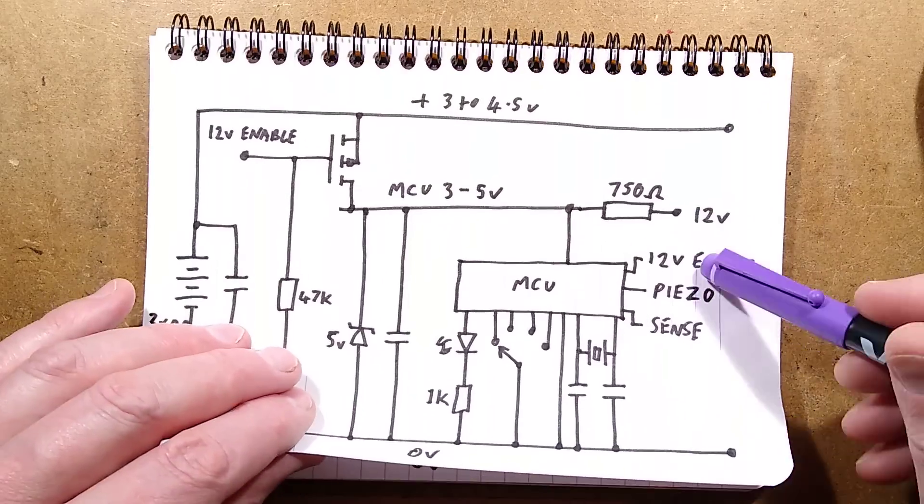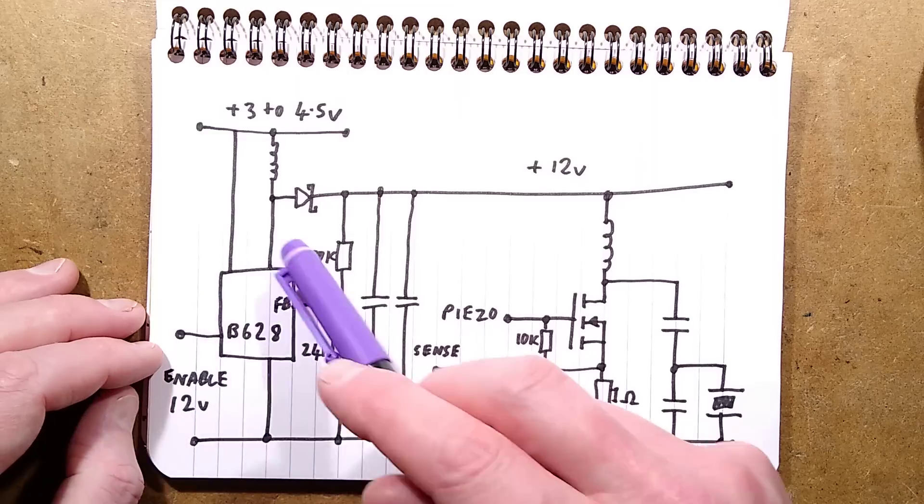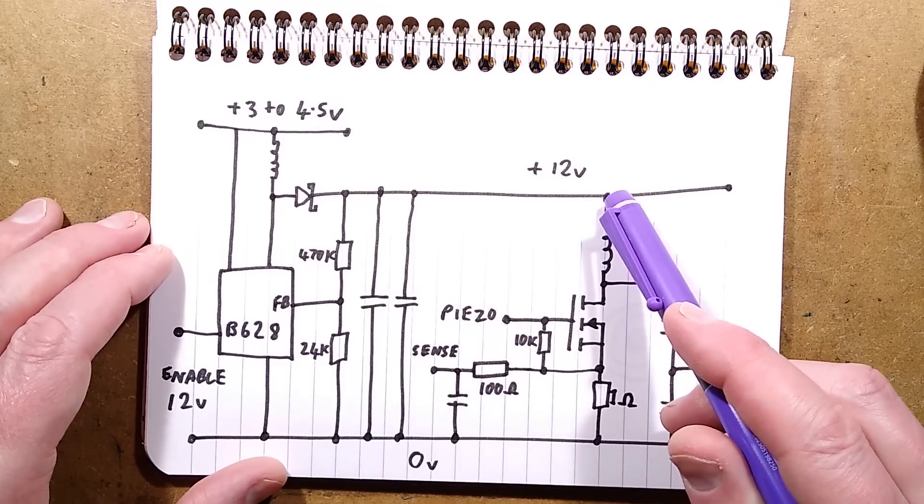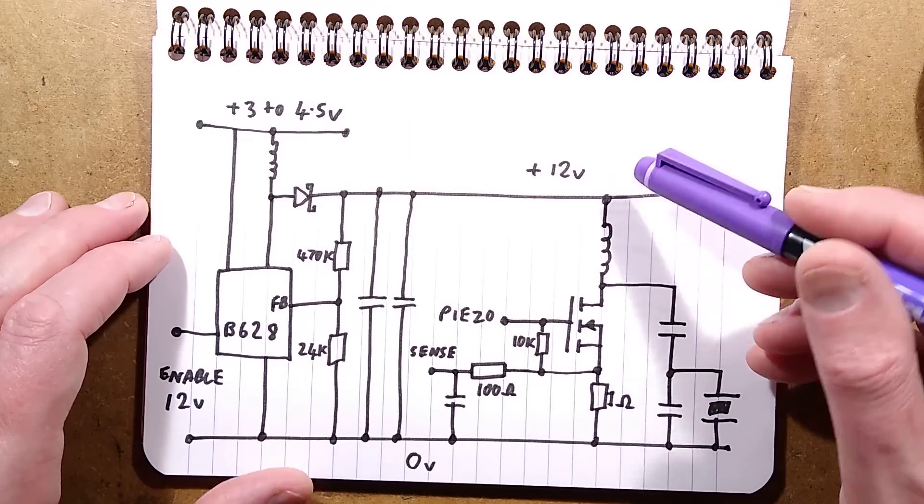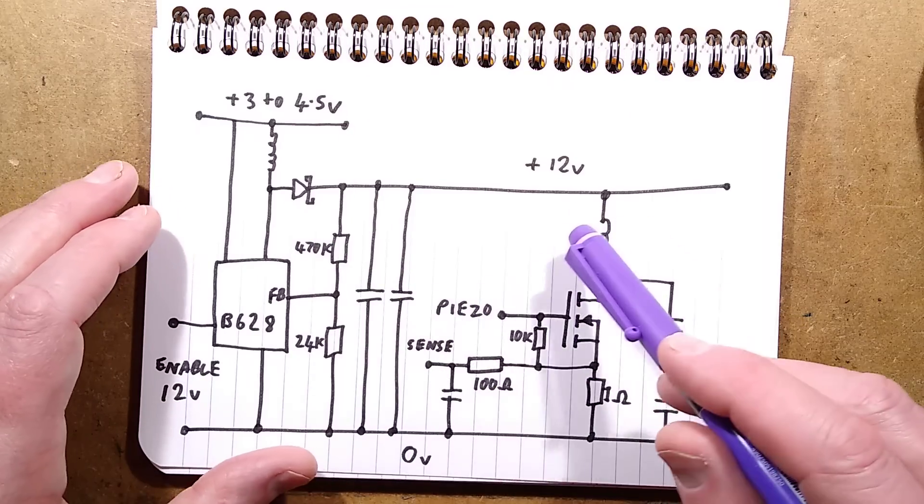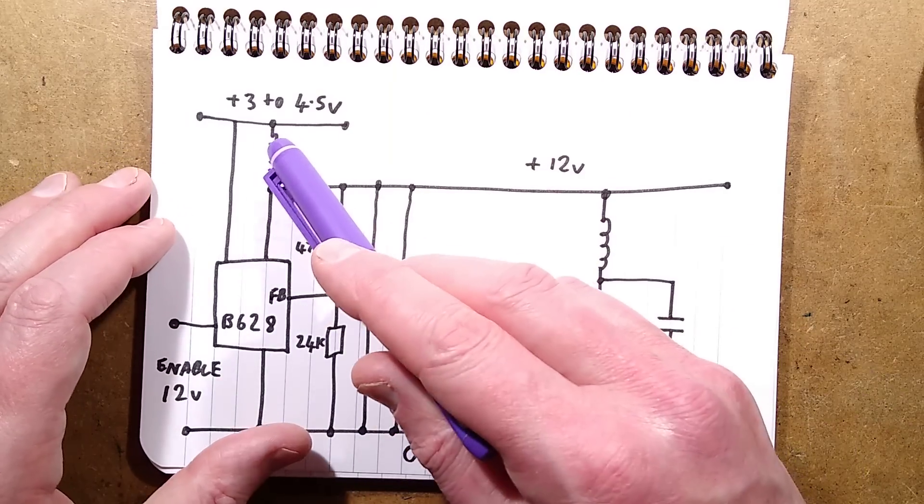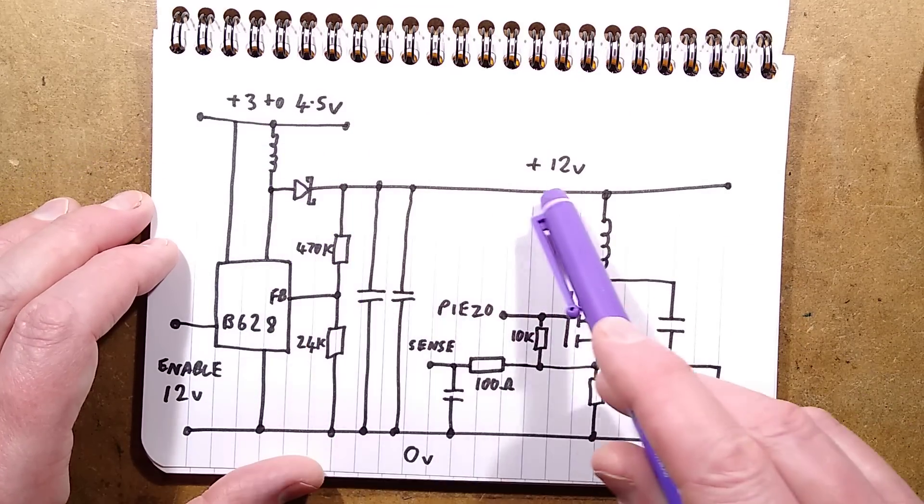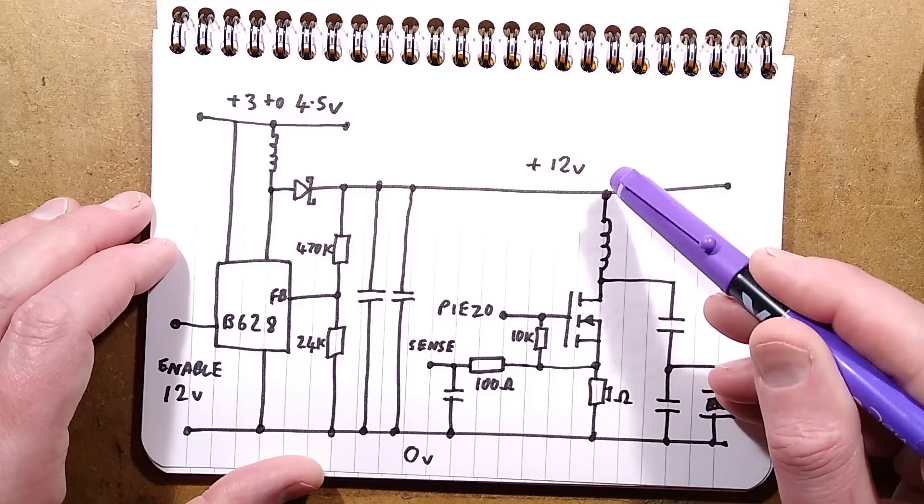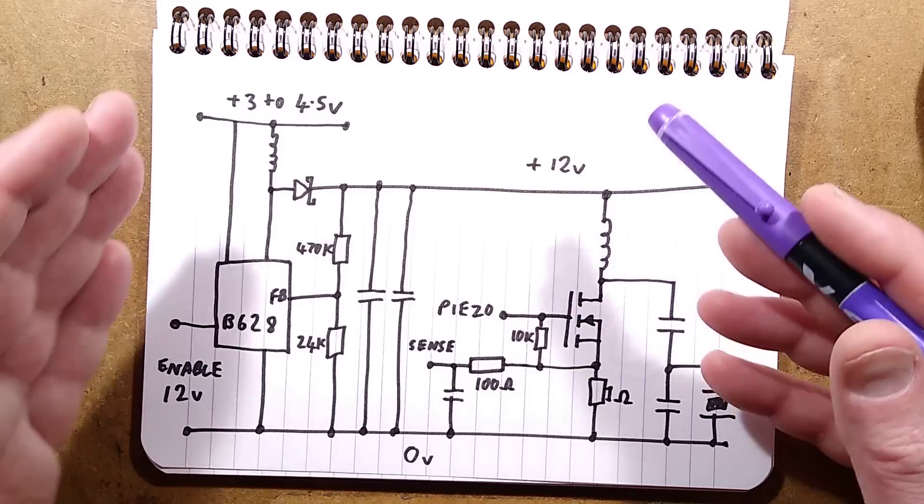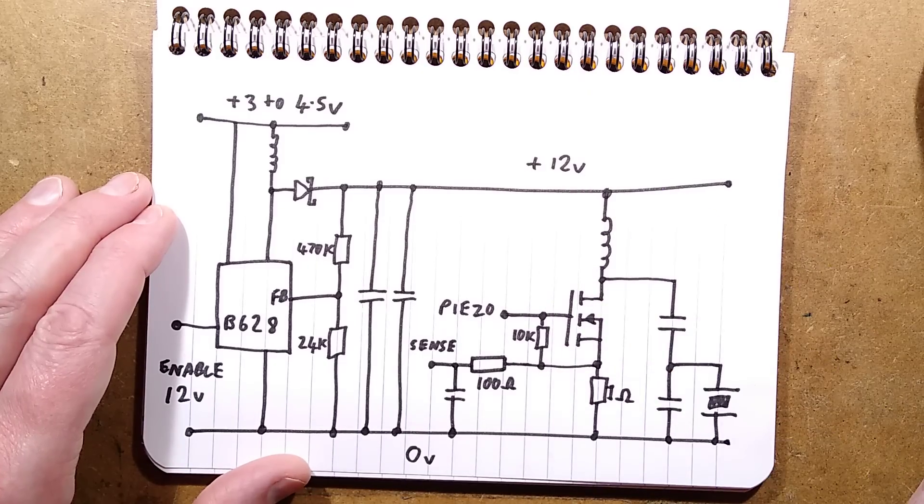When the 12 volt enable is enabled, that's bringing this voltage regulator to create 12 volts, which is normally just floating at roughly the battery level just because it's not being boosted by the inductor. The current will still find its way through the inductor and diode, but you'll get a slightly lower than battery level voltage. But when it's needed, it just boosts it up to that 12 volts. It's very unusual.